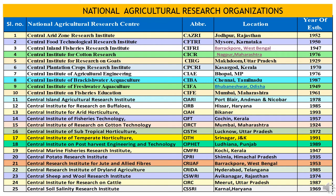Fourth is CICR — Central Institute of Cotton Research — headquartered at Nagpur, Maharashtra, established in 1976. Fifth is CIRG — Central Institute for Research on Goats — headquartered at Makhdoom, Uttar Pradesh, established in 1929. Sixth is CPCRI — Central Plantation Crops Research Institute — headquartered at Kasaragod, Kerala, started in 1970. Seventh is CIAE — Central Institute of Agricultural Engineering — Bhopal, Madhya Pradesh, started in 1976.